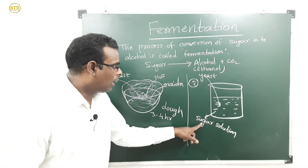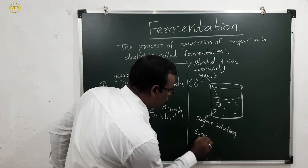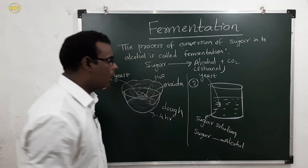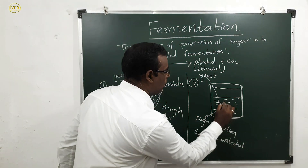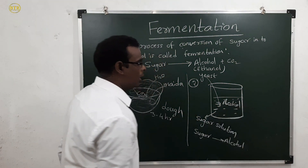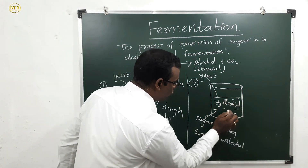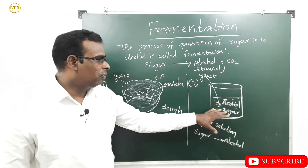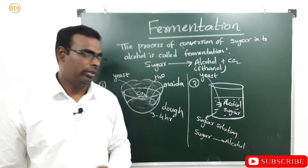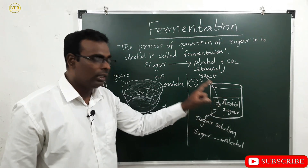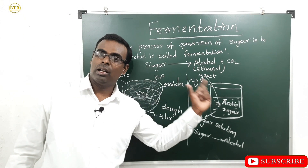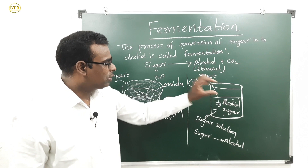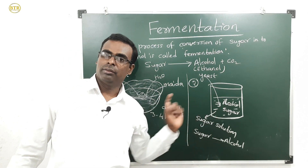The yeast converts the sugar solution into alcohol. After fermentation, in this mixture we can find two solutions: one is alcohol and the other is sugar solution. Now, how can we separate the alcohol from the sugar?